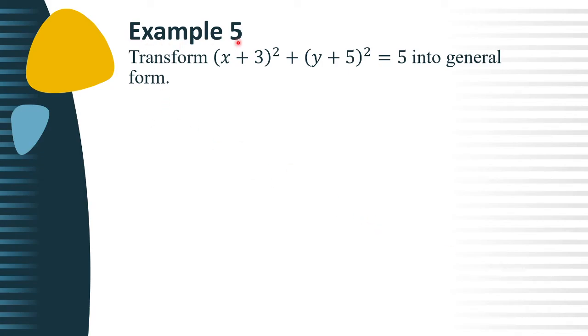Let's have example number 5: transform (x + 3)² + (y + 5)² = 5 into general form. So the given equation is (x + 3)² + (y + 5)² = 5.